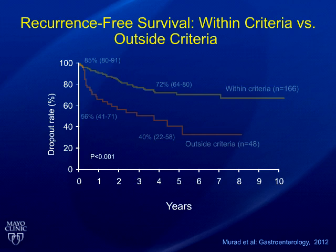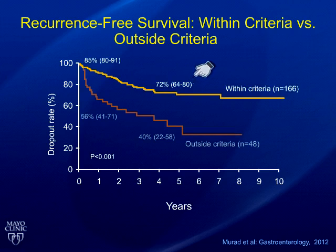If you have intrahepatic metastases, satellite lesions, or a perihilar lymph node positive, these are also absolute contraindications to transplantation — she verified that as well. People within the criteria had close to 80% five-year survival, while people outside the criteria had a less optimal outcome following transplantation.